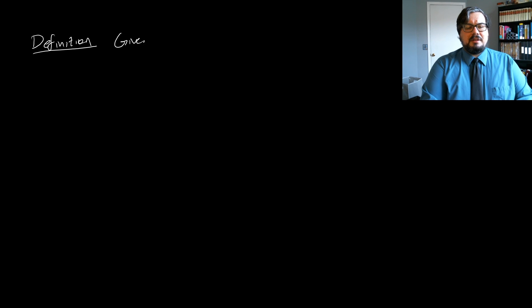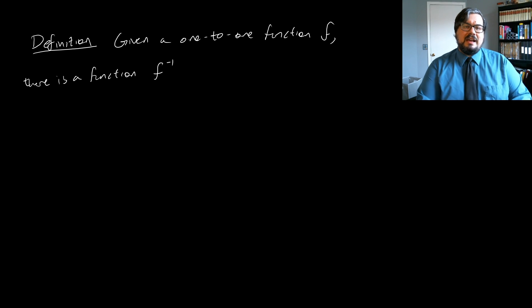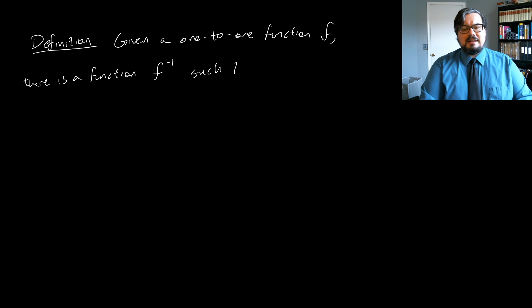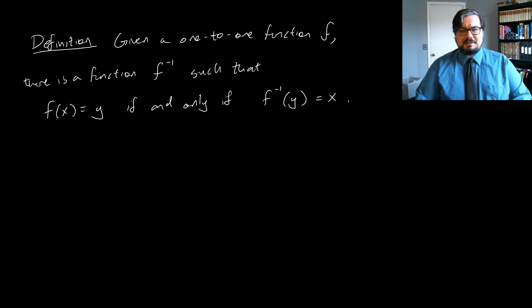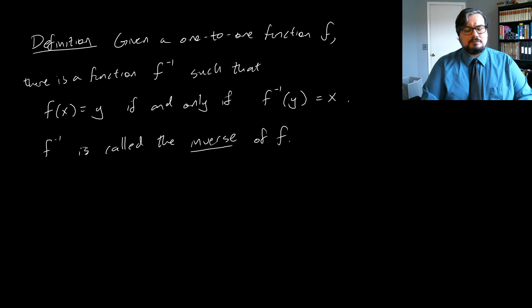So this is the main reason we care about one-to-one functions. Given a one-to-one function f, there is a function we denote f⁻¹ — f with a little negative one in the exponent slot. This is not an exponent; it's merely notation indicating inverse. There is a function f inverse such that f(x) = y if and only if f⁻¹(y) = x. f inverse is called the inverse of f.